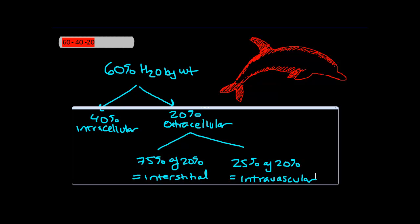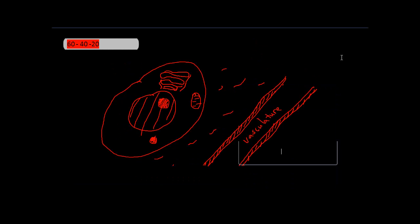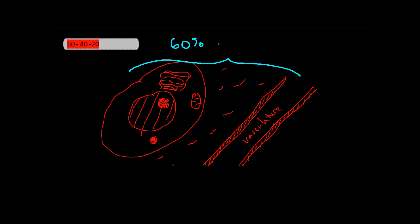Let's do an example to make this clear. Assume we have a 70-kilogram patient. 60% of this patient's weight will be water, which means water will encompass everything here—that's 42 liters. Of this 60%, 40% or 28 liters will be intracellular.